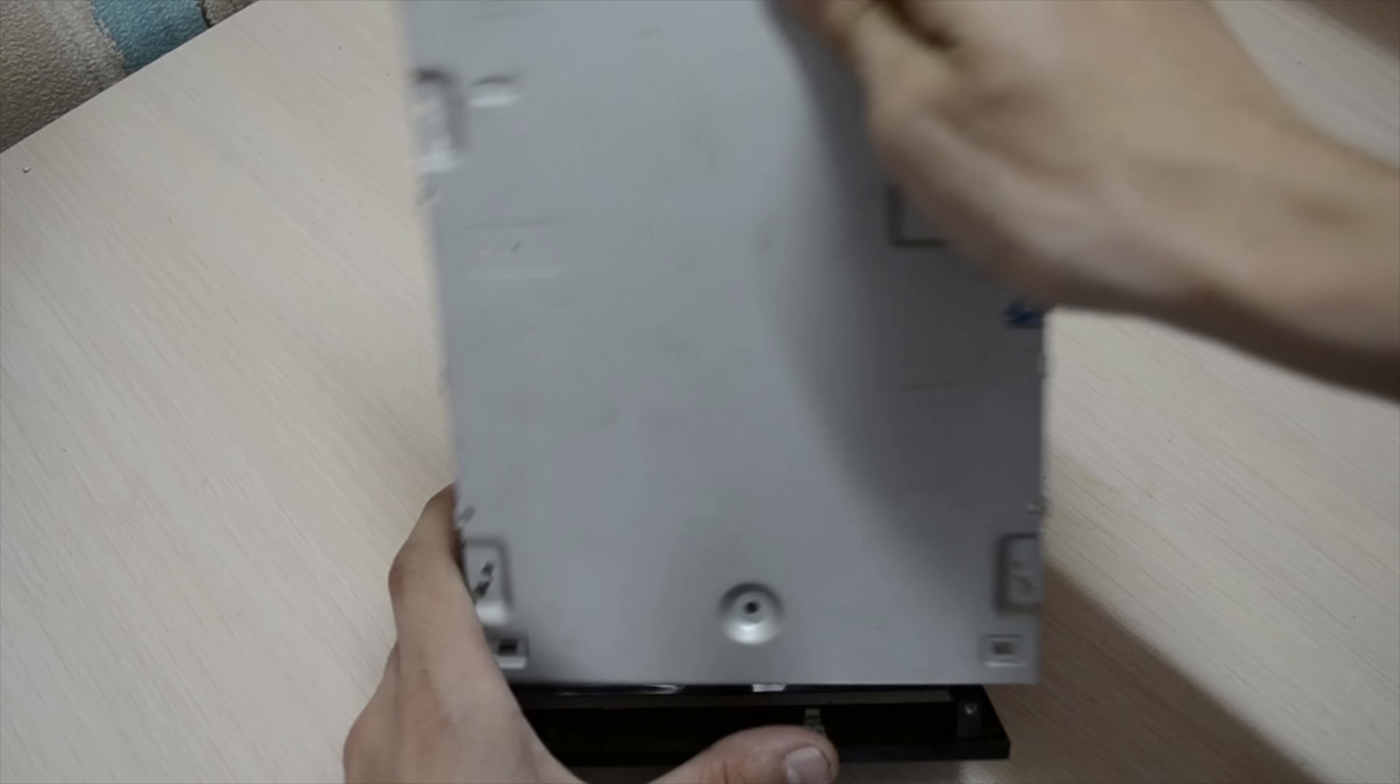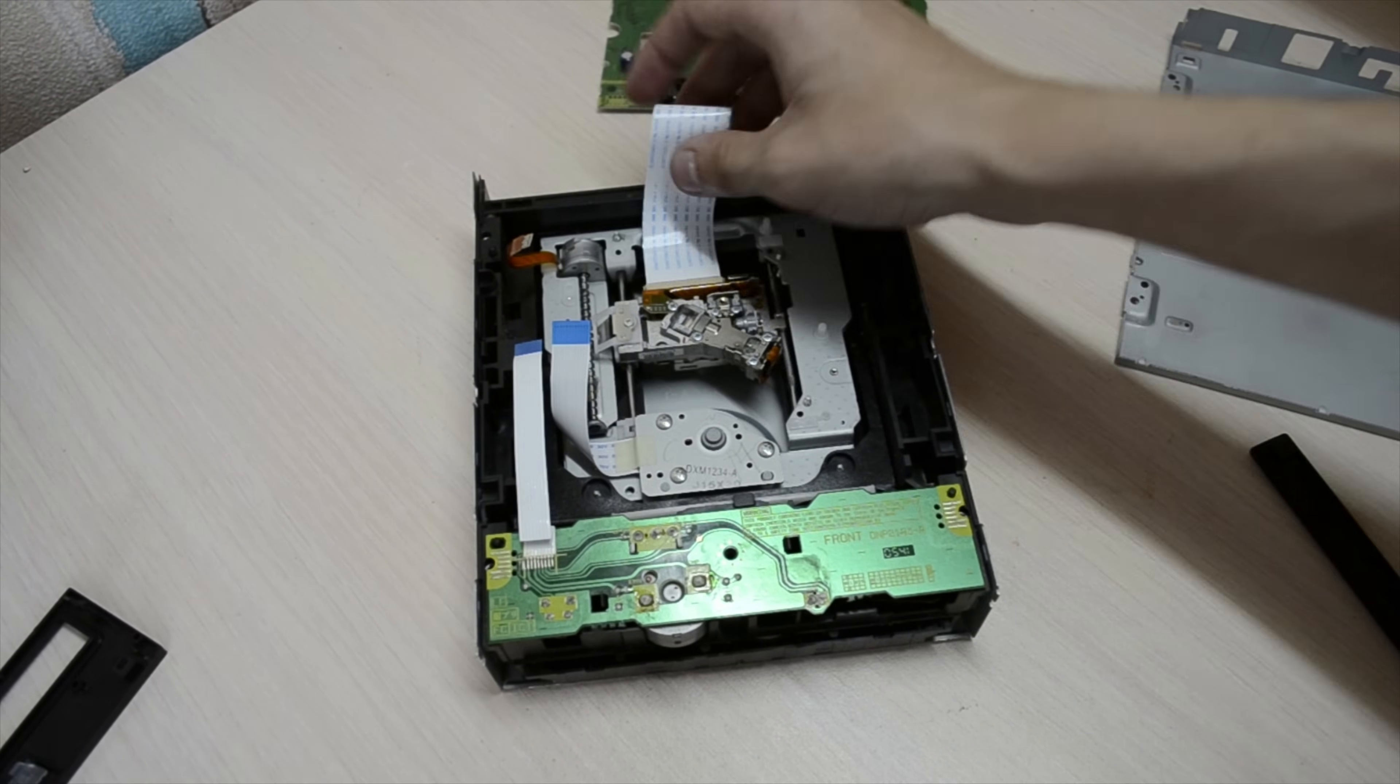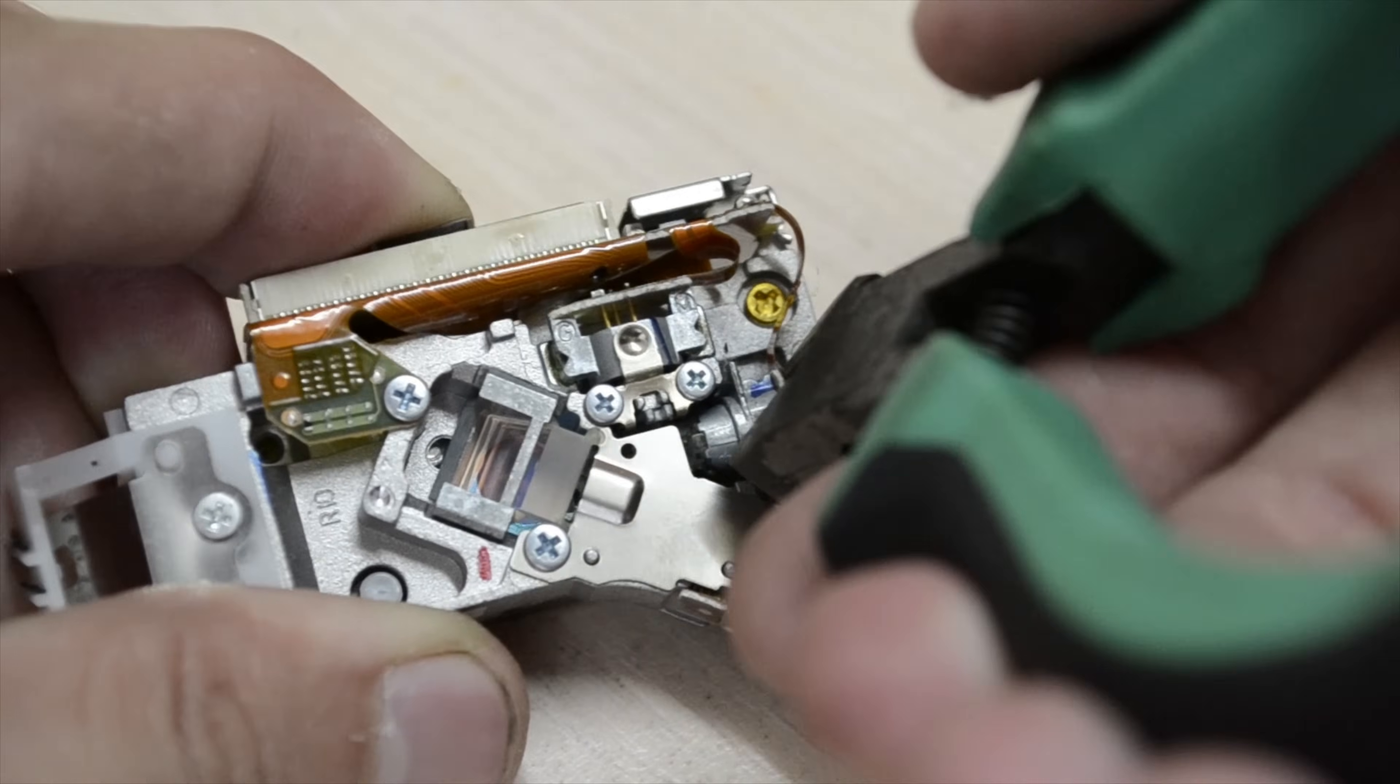First thing first. We need to pull out the laser diode from DVD driver. Open it, find moving parts with lenses, usually there you'll see two diodes. Infrared for CD and just red for DVD.